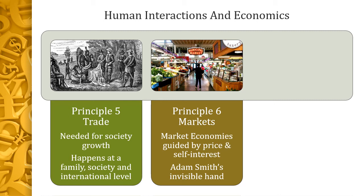Unlike a centralized system where a governing body decides what will be made, how, where, and who will make it, in a market economy businesses big and small make those decisions. Households decide how to spend their scarce resources such as time, employment, and money. Households and firms come together in a marketplace — some are physical locations like a grocery store, some are intangible like the internet — to make trades. Most of these trades are guided by price and self-interest.